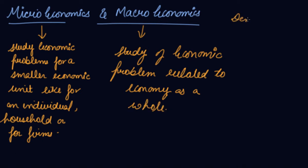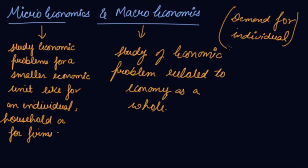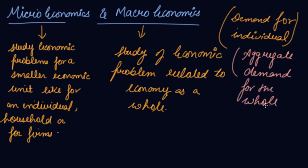When you are studying demand for an individual, then it is your microeconomics. But when you are studying aggregate demand for the whole country, then it is your macroeconomics. Similarly, if you are studying supply for a particular producer, industry, or firm, then it is microeconomics. But when you are studying aggregate supply for all the industries in the country, then it is your macroeconomics.